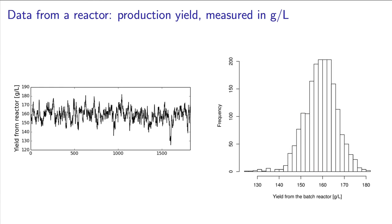Let's say your boss asked you to prepare a histogram that shows the production yield from the reactor, and you used data from the last two years to produce that plot. If the histogram looks like this, then it's easy to infer that the batch yield you might get tomorrow will be somewhere near 160 grams per liter, plus or minus 20 grams per liter. That last example illustrates the importance of a histogram.